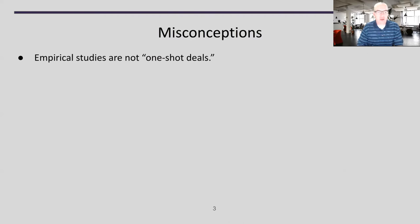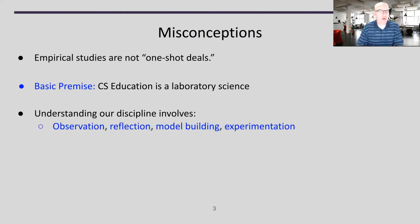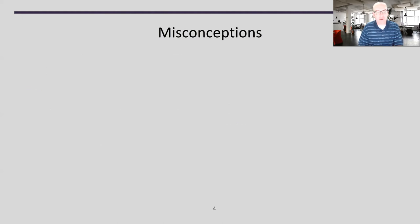The first misconception is that an empirical study is something you do one time and then move on. In reality, empirical studies are not one-shot deals. We need to run, rerun, and replicate them in different situations to better understand what's going on. Computer science education is really a laboratory science — you use the scientific method, observe your classroom, make reflections, build models, and test them through experimentation. Then you iterate, following this scientific process over and over to get a deeper understanding of what's really going on.